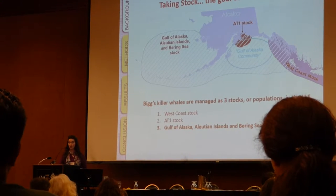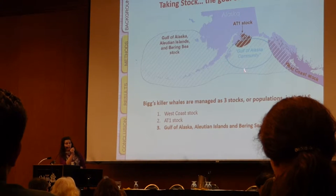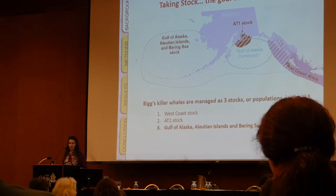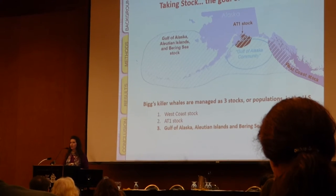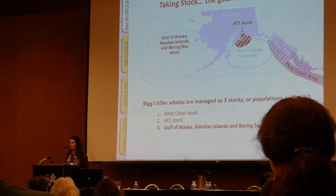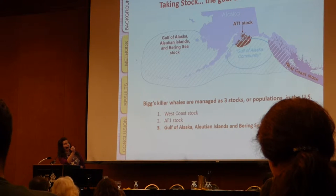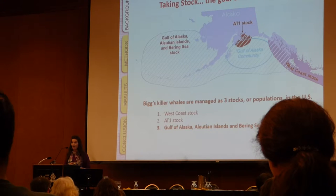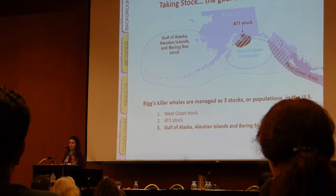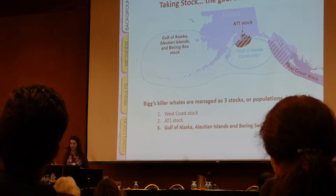The exception is that we do know a bit more about this group of Biggs killer whales, which we refer to as the Gulf of Alaska transient community. There is information indicating that both genetically and acoustically they are distinct from the AT1 stock and the West Coast stock. However, it's unclear how this community relates to those Biggs killer whales found farther west.